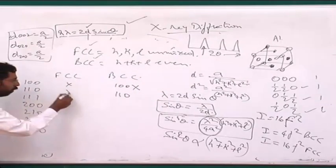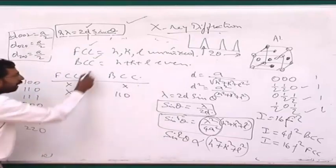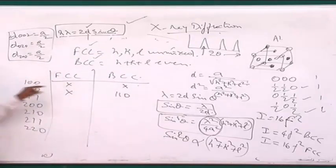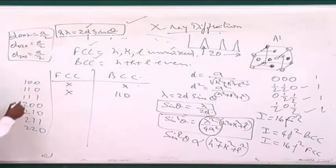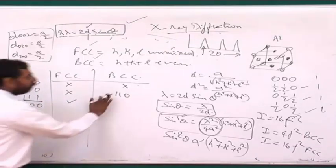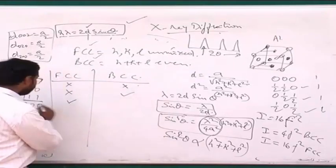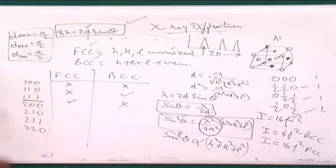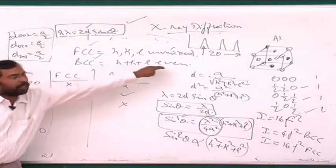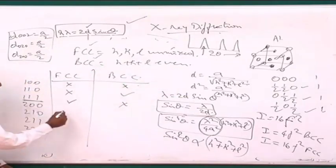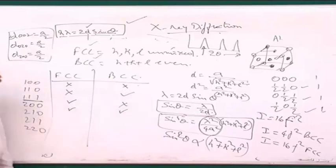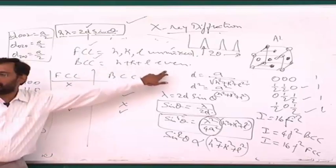For BCC, checking all allowed peaks: 110 (sum=2, present), 200 (sum=4, present), 211 (sum=6, present), 220 (sum=8, present), 310 (sum=10, present), 222 (sum=12, present). The H²+K²+L² values increase in steps of 2, meaning the peaks are equally spaced in sin²θ. For FCC: 111 (H²+K²+L²=3), 200 (4), 220 (8), 311 (11), 222 (12), 400 (16), 331 (19), 420 (20).